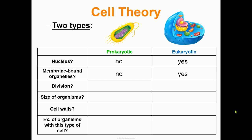Eukaryotic cells do have membrane-bound organelles — you-do. So prokaryotic cells: no nucleus, no membrane-bound organelles. Eukaryotic cells: yes nucleus, yes membrane-bound organelles. For division, prokaryotic cells do binary fission, where they basically just split in half and make two new cells. Eukaryotic cells go through mitosis, the more complex version of cell division, where everything inside the cell is duplicated before the cell separates into two new identical cells.